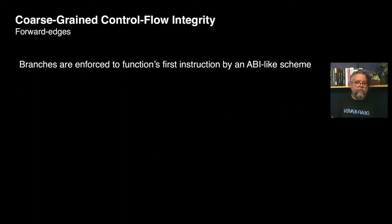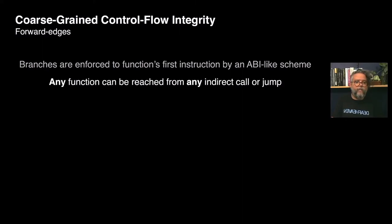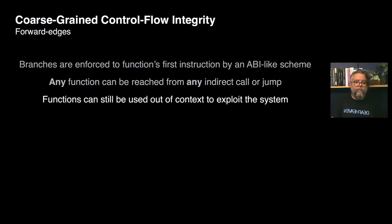With something like this in place, you can have your compiler emitting end-branch instructions in the prologue of every function, creating an ABI-like scheme that forces indirect calls to always target the first instruction of functions. This is actually what we call coarse-grained control flow integrity. The result is that now any function can be reached from any indirect call or indirect jump. This guarantee is too relaxed, and it still allows functions to be used out of context to exploit the system, so coarse-grained CFI does not fully mitigate the control flow hijacking problem.